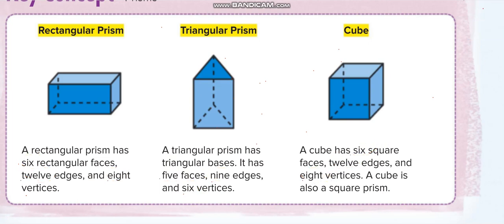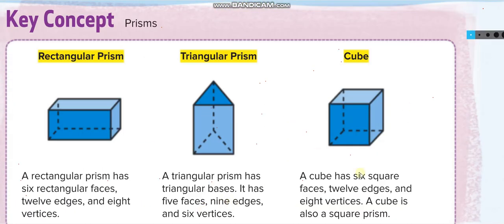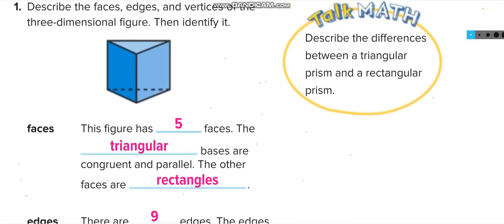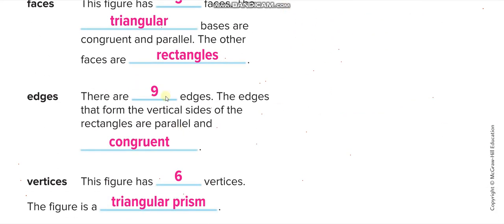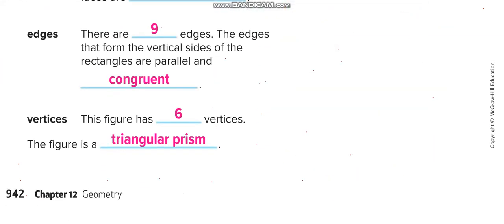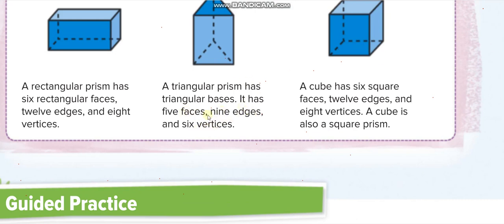Let us go down. From here, from the top, you have to see and then write it. This is a triangular prism — the top and the bottom we call triangular bases. It has five faces, and the other three sides are rectangles. There are nine edges in a triangular prism, and the edges that form the vertical sides of the rectangles are parallel and congruent. The figure has six vertices. So it is a triangular prism: six vertices, nine edges, five faces.